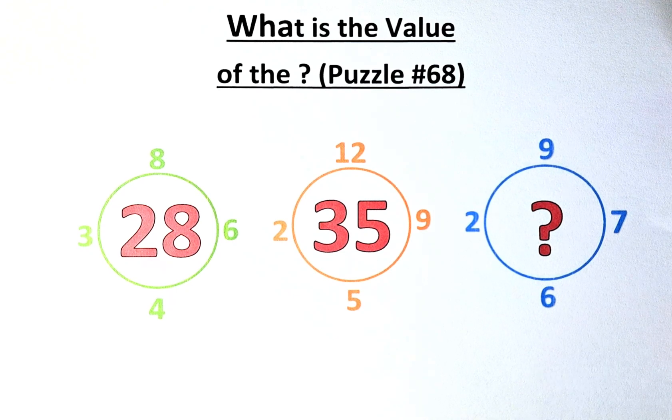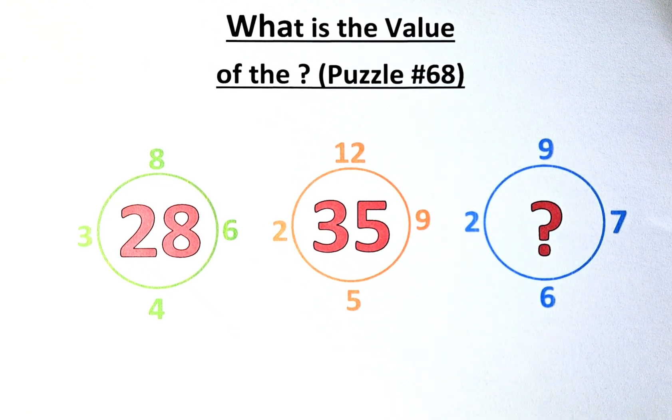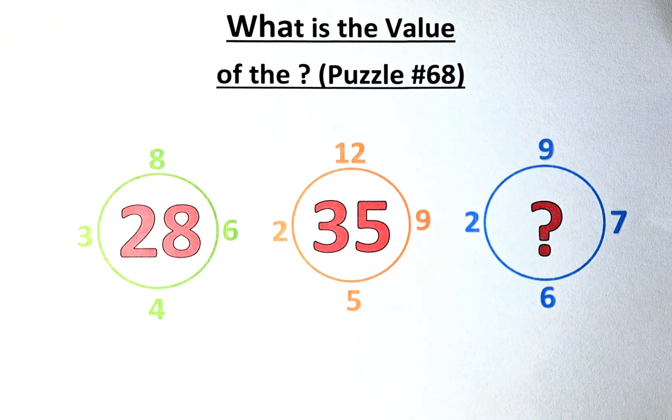The numbers are 3, 8, 6, 4 and the middle number is 28 in the first circle. 2, 12, 9, 5 and the middle number is 35 in the second circle. And 2, 9, 7, 6 and we need to know what is the middle number represented by the question mark.